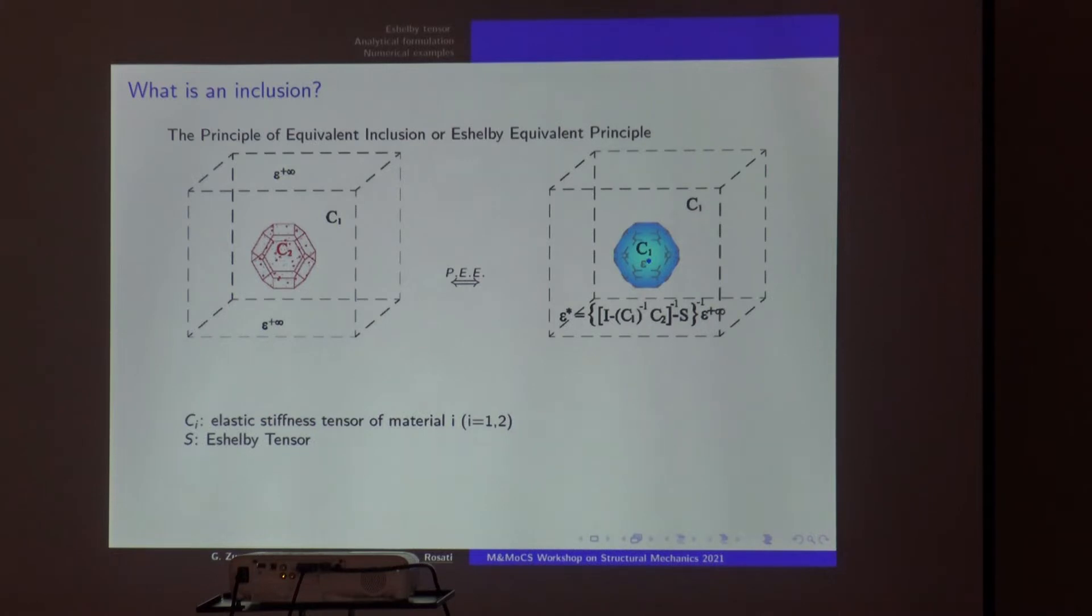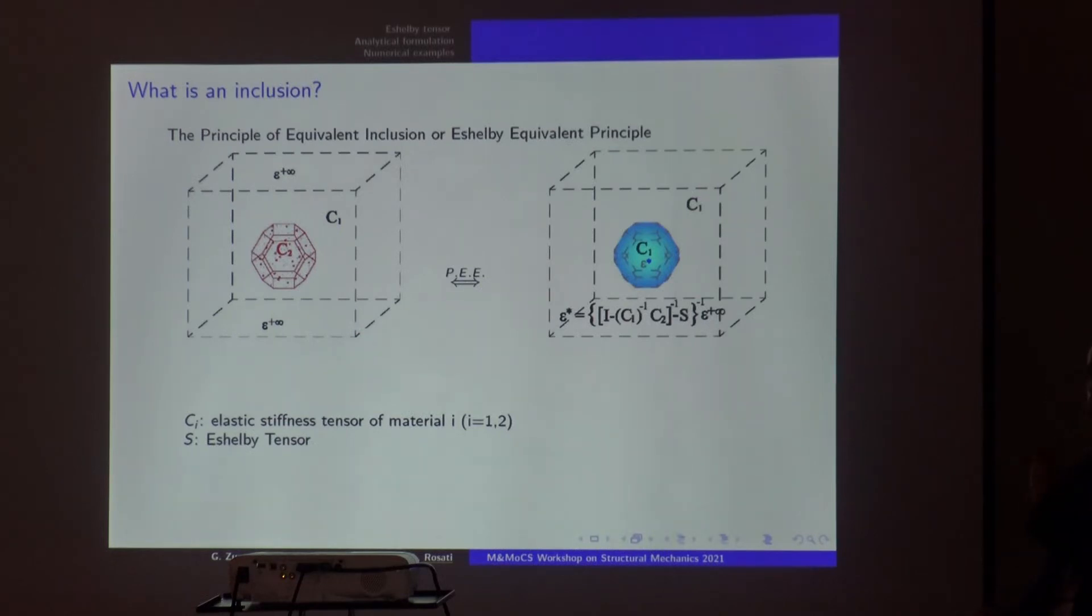This equivalent strain is obtained from the strain tensors applied at infinity by means of a special tensor, the Eshelby tensor. On this basis you evaluate the concentration tensors and apply formulas to get the overall properties of your equivalent medium. To do this, you have to compute this tensor in some way.